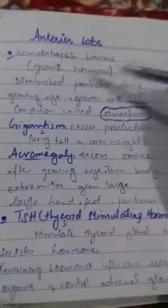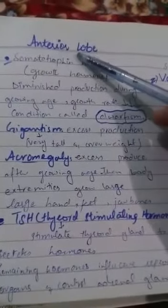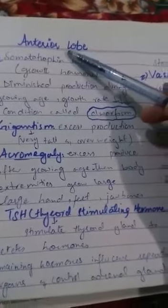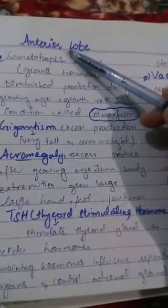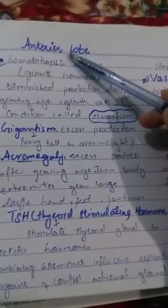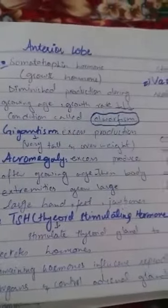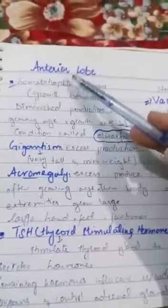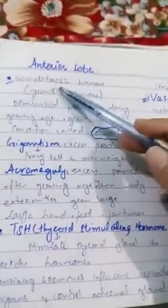In this video we discuss the lobes of the pituitary gland. The pituitary gland is divided into two lobes: the anterior lobe and the posterior lobe. First, we look at the anterior lobe.